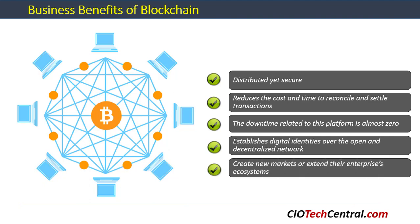Also, due to its potential to bring various parties onto one centralized digital platform, blockchain is ideally suited for large business ventures looking to create new markets or extend their enterprise ecosystems. For example, all organizations that are part of the car supply chain — from the manufacturer to government agencies that register those vehicles, and the customers that buy them — can all be part of an extended blockchain, providing all parties complete visibility on the complete history of the vehicles.